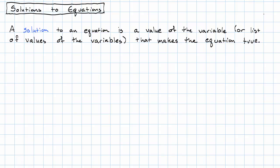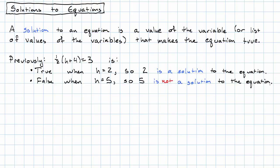So, in the last video, we saw that the equation one-half times h plus four equals three. That equation is true when h equals two, and false when h equals five. So using this new word, two is a solution to the equation, and five is not a solution to the equation.